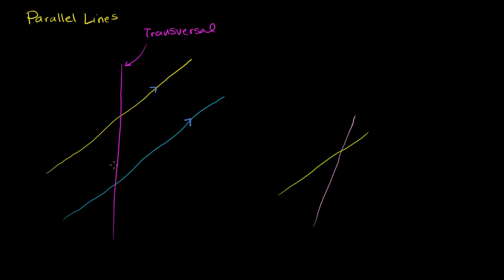Whenever you have a transversal crossing parallel lines, you have an interesting relationship between the angles formed. This shows up on a lot of standardized tests — it's a core type of geometry problem. The first thing to realize is that if these lines are parallel, corresponding angles are going to be equal.